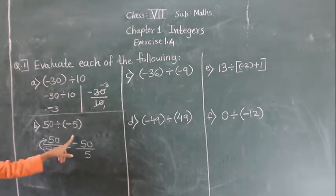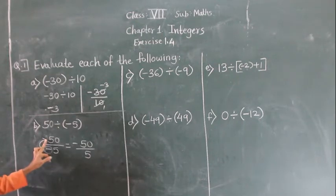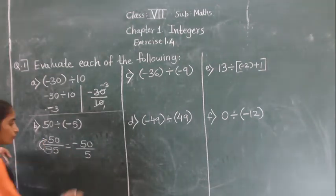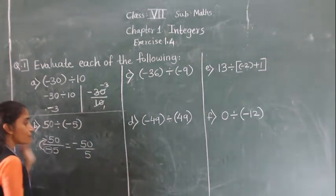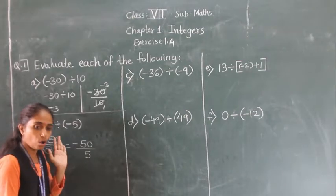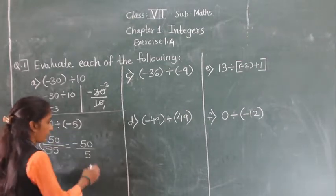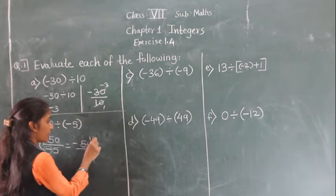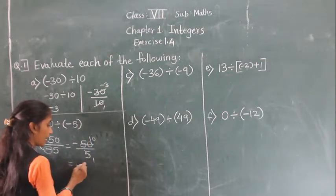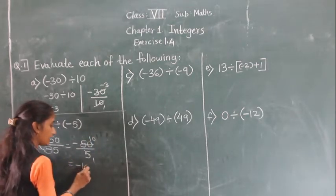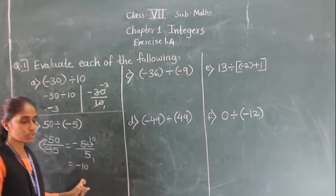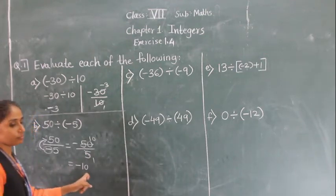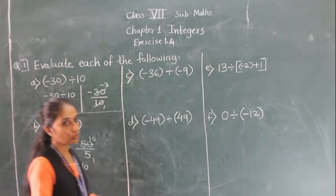So now we have minus 50 upon 5. First we divide them as whole numbers: 5 tens are 50. And put a minus sign before the answer.